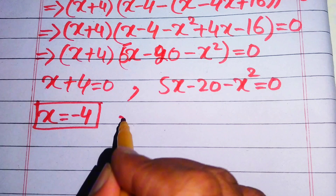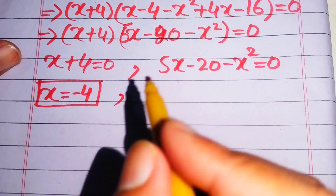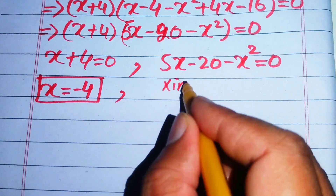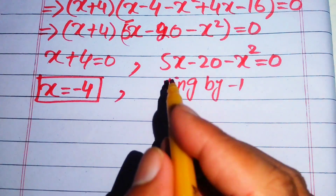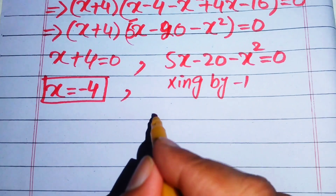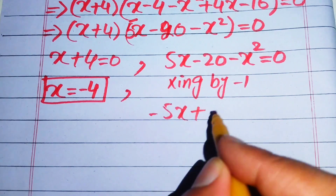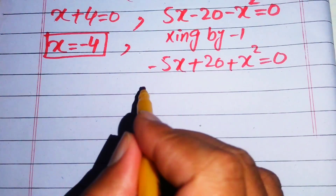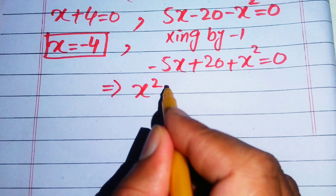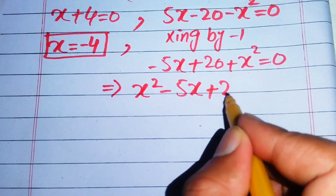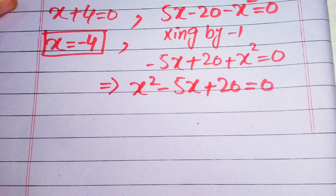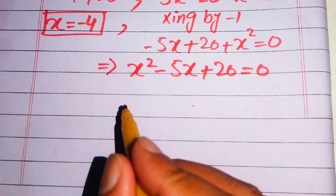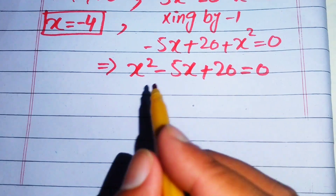To find the other solutions, we need to solve the quadratic equation. We first write it in standard form by multiplying both sides by minus 1. This gives us x squared minus 5x plus 20 equals zero. Now it is time to apply the quadratic formula to solve this quadratic equation.